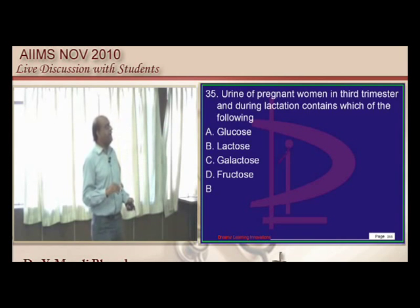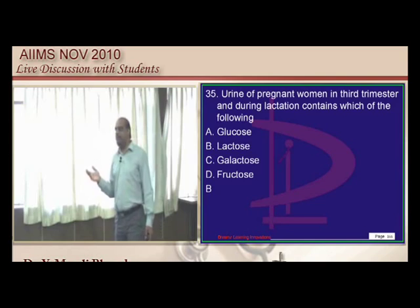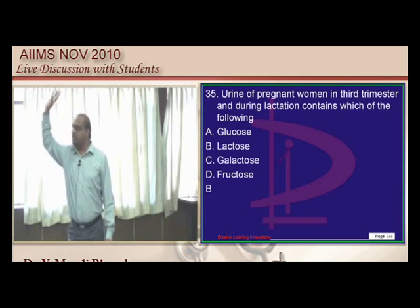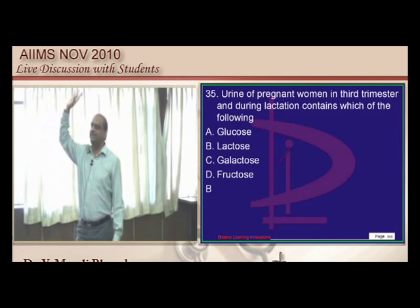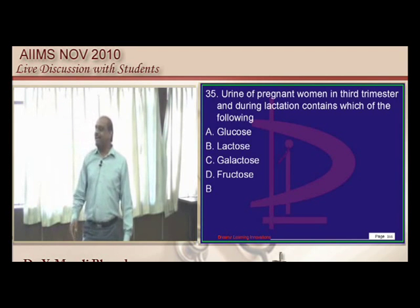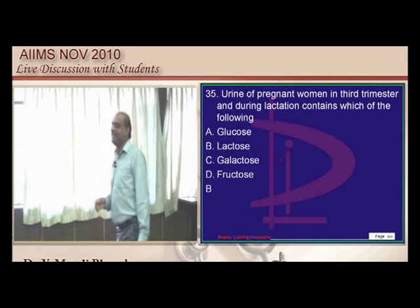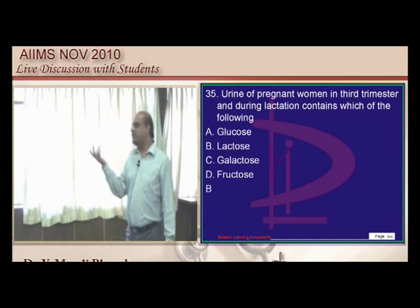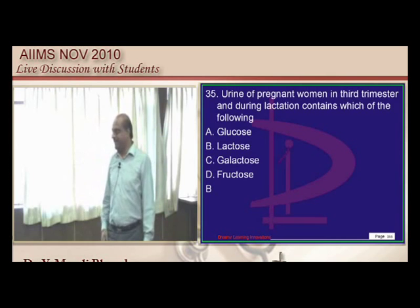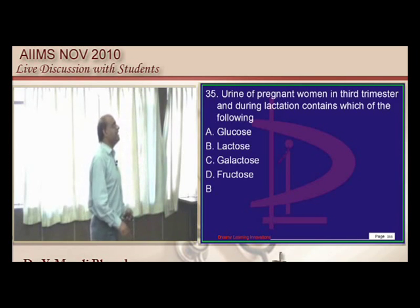In the third trimester of pregnancy and at the time of lactation, the sugar found is lactose — though glucose is also a potential answer for pregnancy. We will verify that reference.